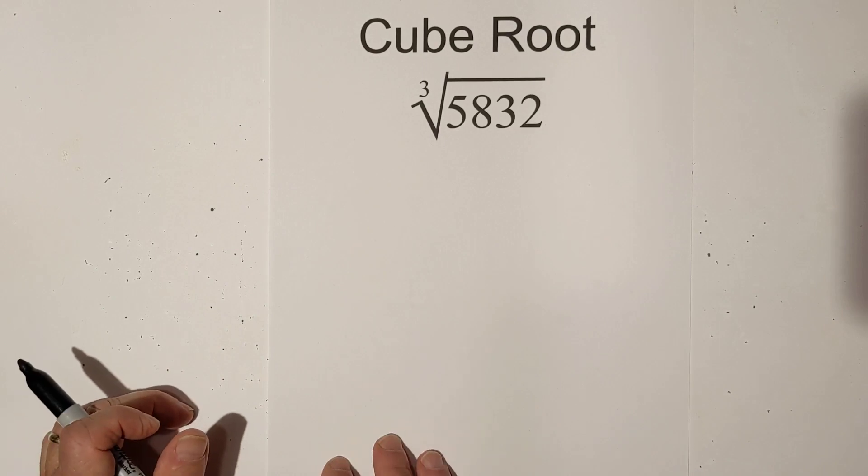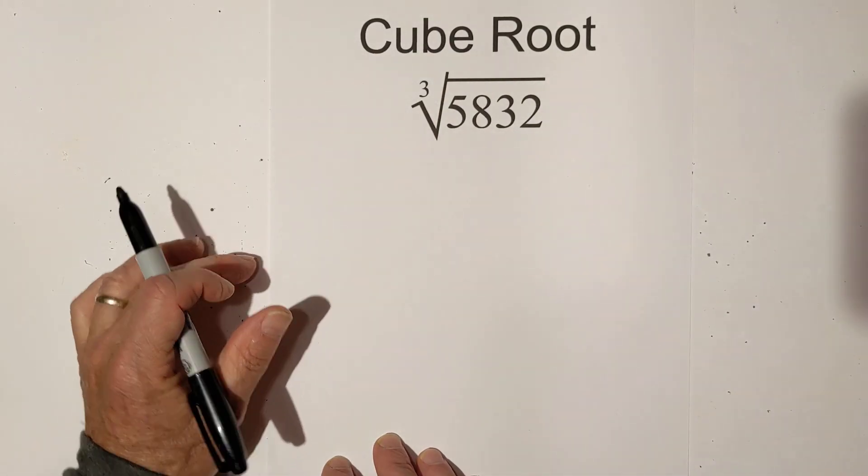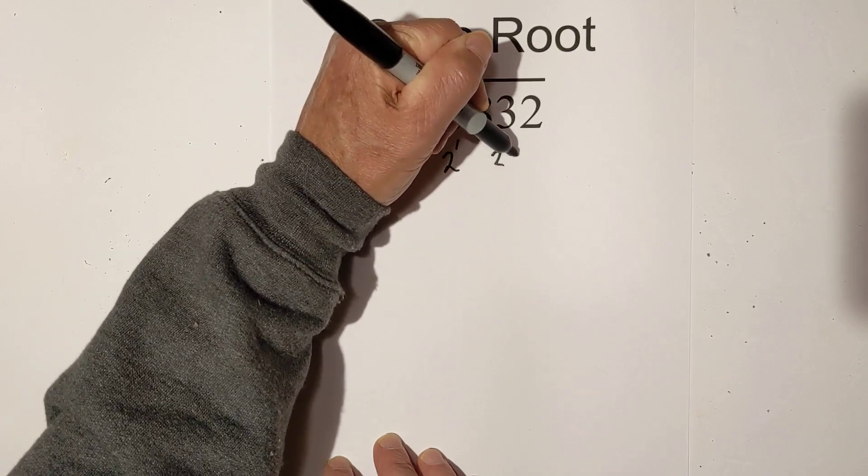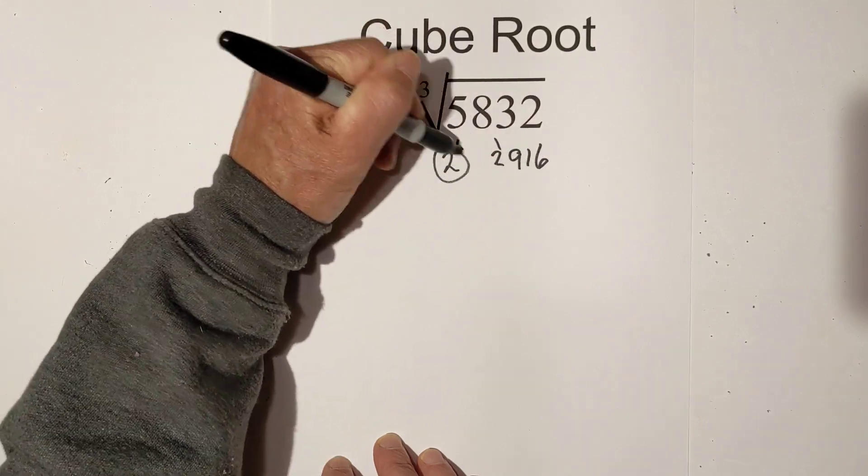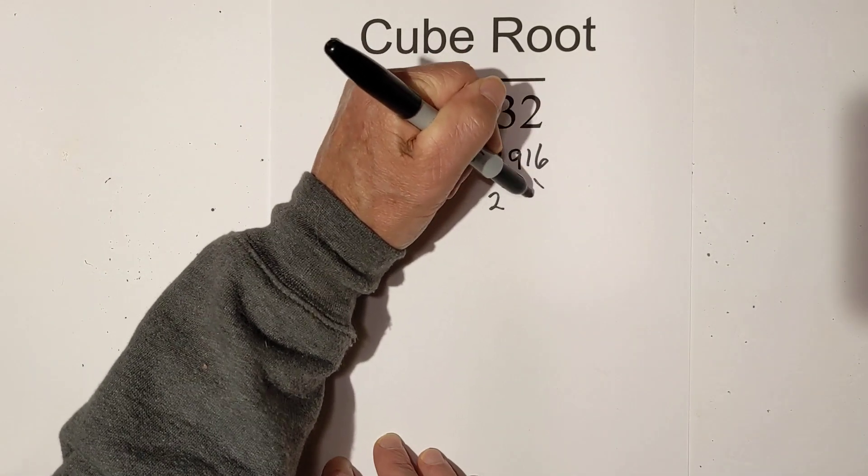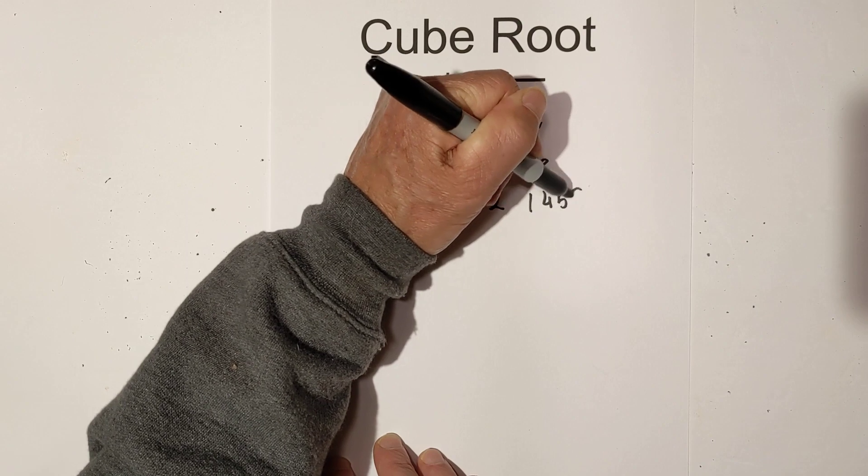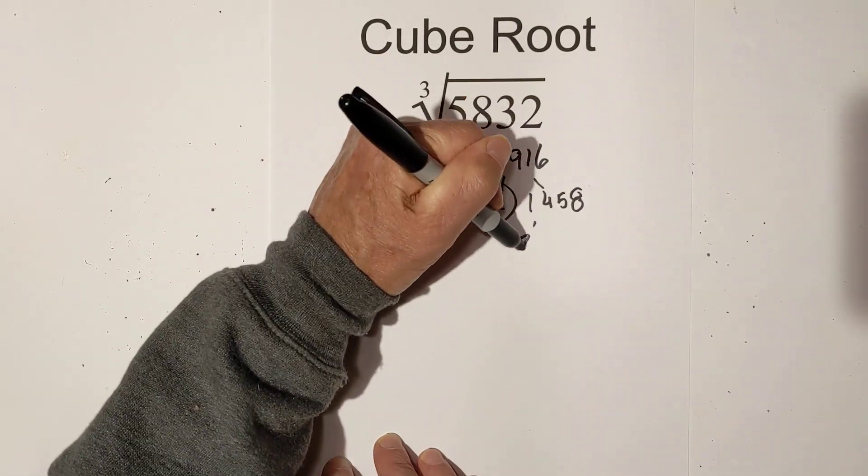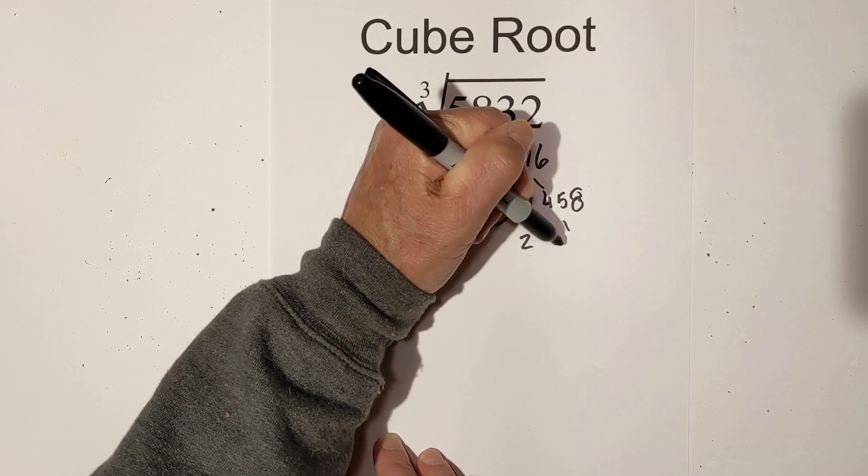In some ways it's easier because you can use 2 because it ends in an even number. So let's go 2 times 2916, circle the 2 because it's prime, and then 2 times 1458, circle the 2 because it's prime, and now 2 times 729, circle the 2 because it's prime.